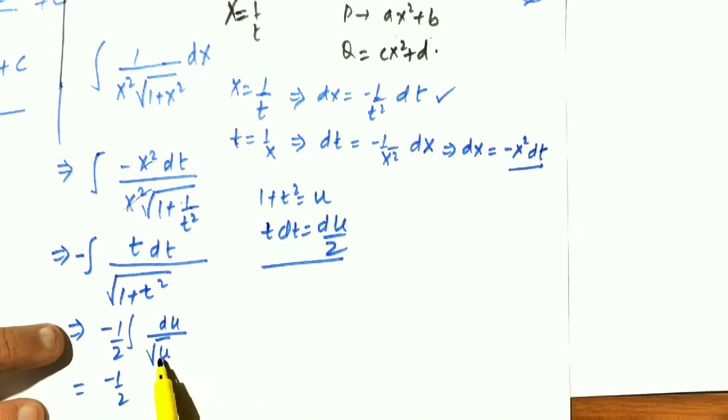How to simplify this? That is negative of, so u ki power minus half, u power half upon half. So 2 will be cancelled. The answer is minus square root of u.